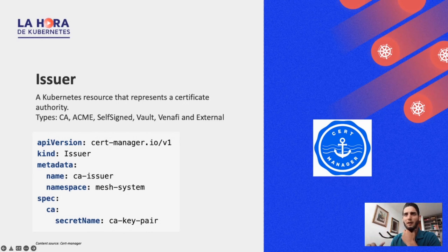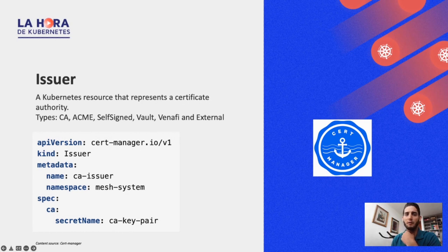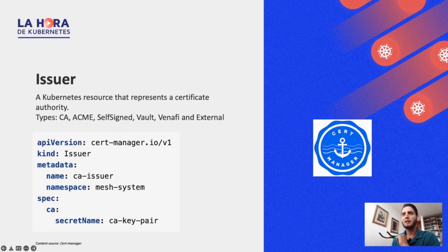The reason they do that is for testing. If you're working on your own development environment and want to make sure the whole process works, use staging because the production one has rate limits that you want to be careful not to cross. What we declare here is the server which is the API endpoint, the email, the name of the secret we want to use for storing that specific information, and the solver.